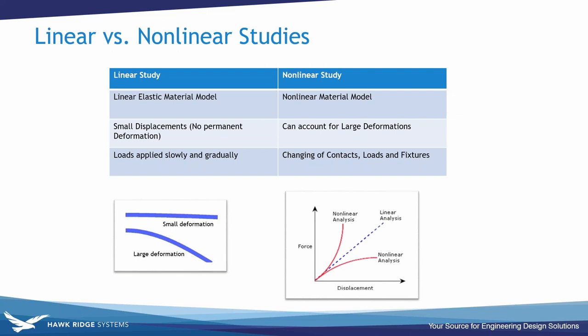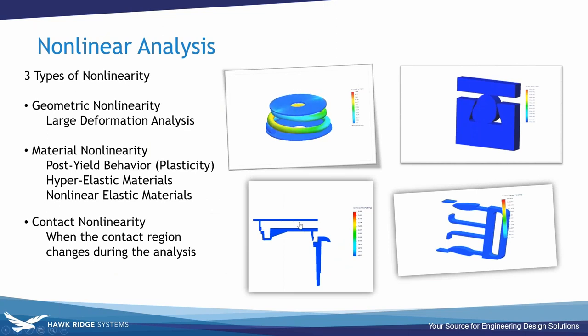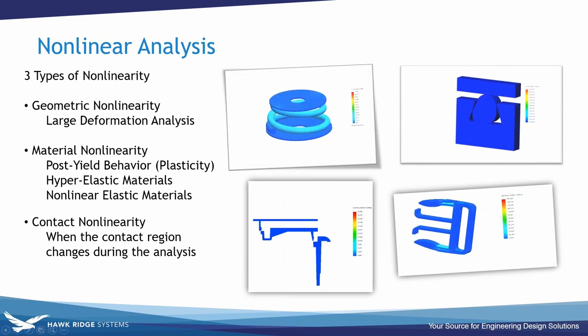If you fit within those assumptions, a linear static is a good fit. But if you want to see stresses in the post-yield range, or if you're dealing with complex materials like rubbers or plastics, then we graduate to a non-linear analysis where we can account for non-linear materials, large deformation, and a change in contact. There are three major categories of what's classified as a non-linear analysis.